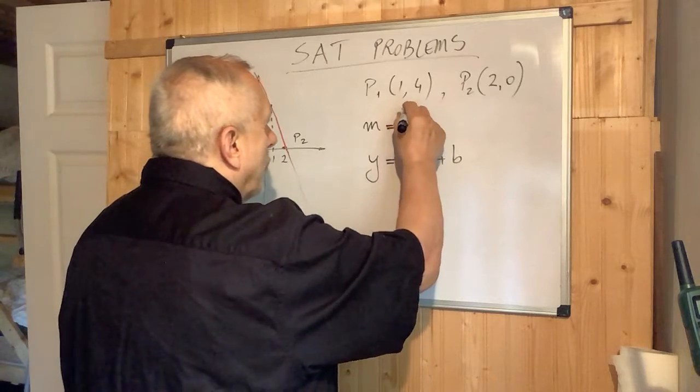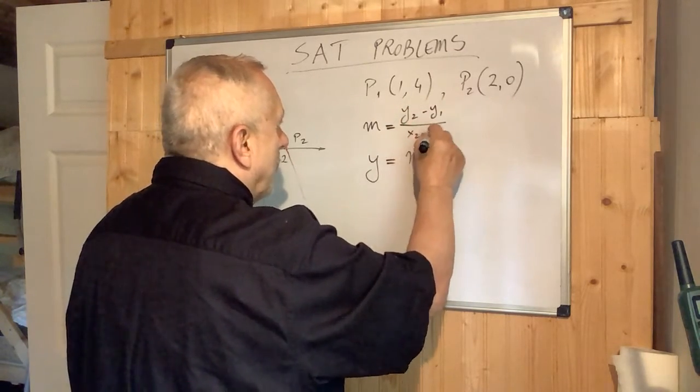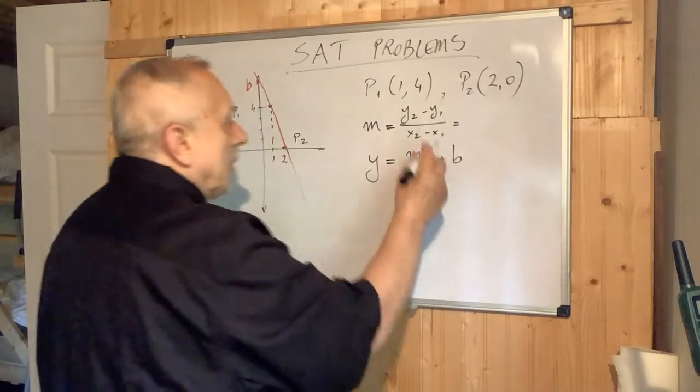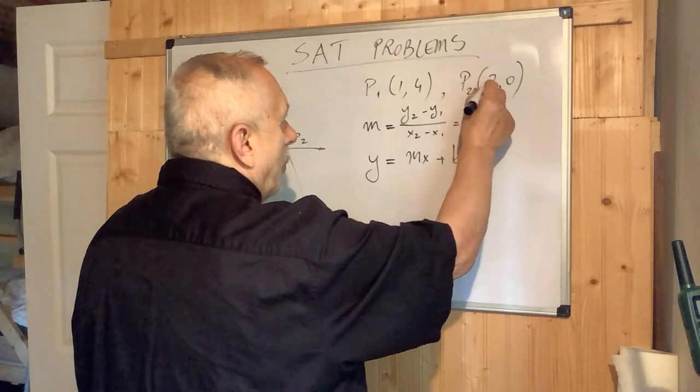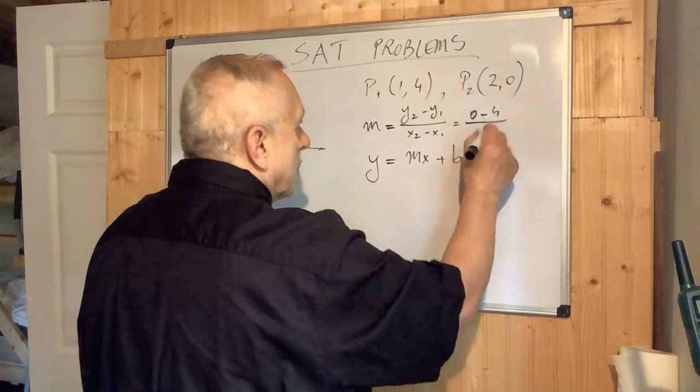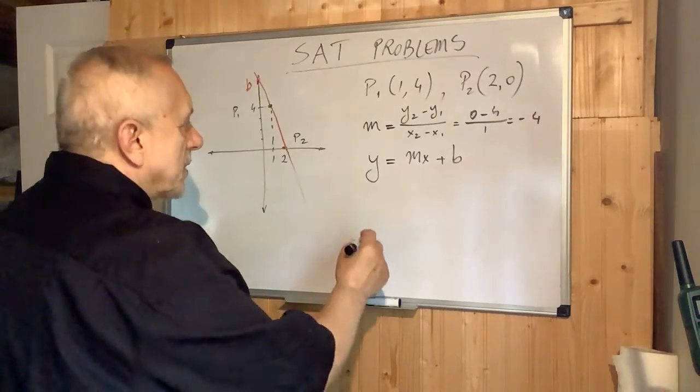We can find m by this formula: (y2 - y1) / (x2 - x1). In our case, y2 is 0 minus 4, over 2 minus 1, which is 1. So we get minus 4.